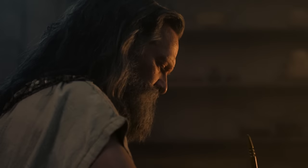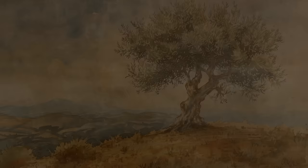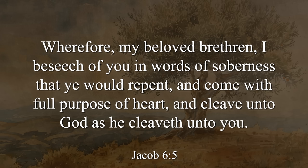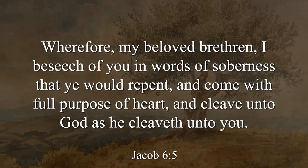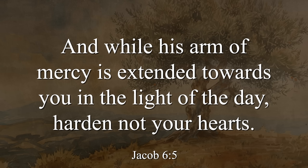Jacob then describes in chapter 6 what he wants his people to learn from the allegory. He ties it back to the atonement of Jesus Christ, talking about the mercy of the Lord. In verse 5, he says, 'Wherefore, my beloved brethren, I beseech you in words of soberness, that ye would repent and come with full purpose of heart, and cleave unto God as he cleaveth unto you. And while his arm of mercy is extended towards you, harden not your hearts.' He's using the whole allegory to say: come unto Christ, be cleansed through his atonement, and be patient.